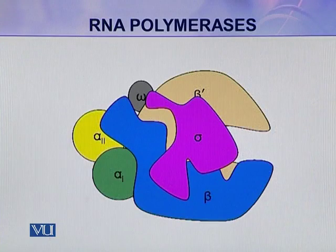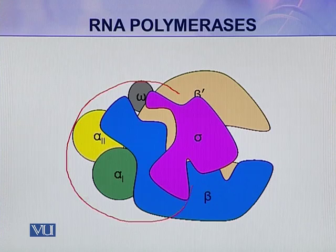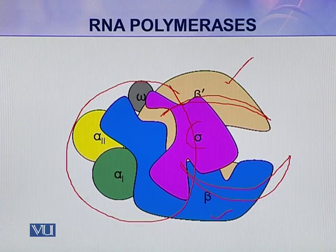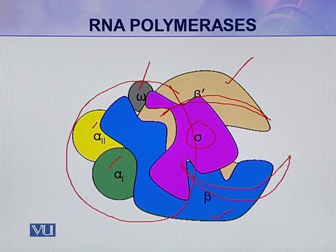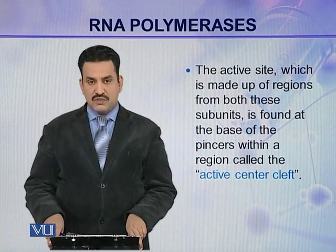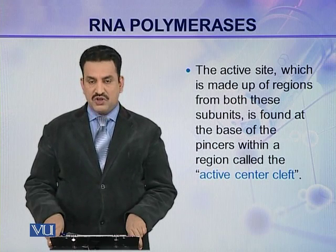Here you can see a diagram of the structure: this is a crab with two claw pincers. This unit is beta prime, this is beta, this is the sigma unit, this is the omega unit, and there are two alpha units, alpha 1 and alpha 2. This is the structure of bacterial RNA polymerase.